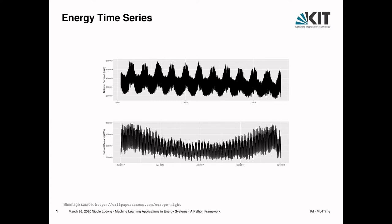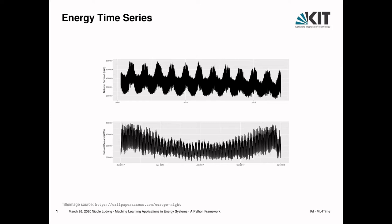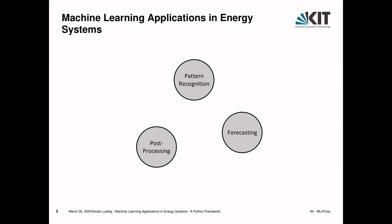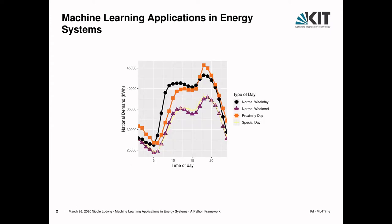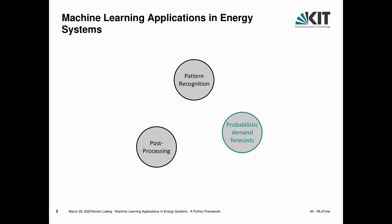But machine learning is still used for energy time series, and if handled properly, it has really good results. So where do we use machine learning? At the moment we do pattern recognition, detecting typical load profiles — for example, what a typical normal weekday demand or weekend demand looks like. There's also probabilistic demand forecasts, which most of you are probably familiar with.